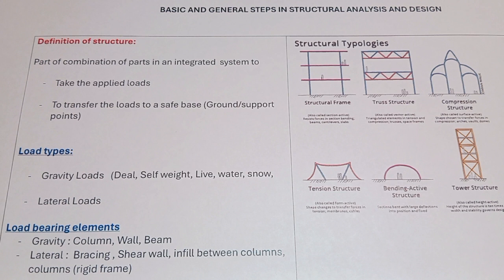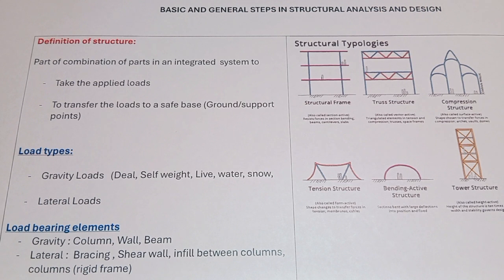In general, we have two load types to apply on a structure. The first is gravity loads, like dead load, self-weight of the structure, live load, water load, water ponding, snow, and rain. The second is lateral loads, like water pressure, soil pressure, wind, and earthquake. If we have any inclined or oriented loading, we can convert it to lateral and gravity loads for simplicity and for use in most software.